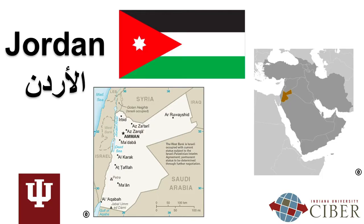We have chosen this dialect for two reasons. First, Jordan is currently one of the safest countries within the Middle East and has seen an increase in American tourists and students studying abroad in recent years. And second, the Levantine, or Jordanian dialect, is understood across the Arab world. You should be able to use the words and phrases introduced in this video series and be understood in any country in which Arabic is spoken.